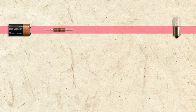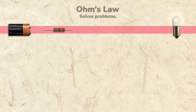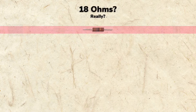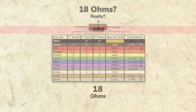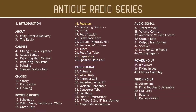So, let's connect the battery and bulb now with the resistor in between. Perfect. And that's how Ohm's law solves problems. But wait — how do we know this is an 18 ohm resistor? Well, because the bands say so. We'll learn more about them and more in the next video.